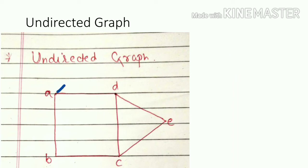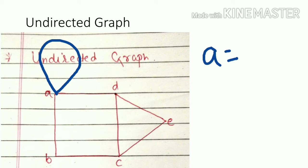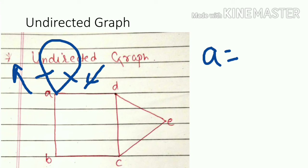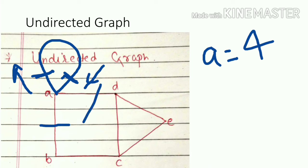Now suppose there is a loop on vertex A. Always remember, if there is a loop on an edge we consider it as 2 — one for outgoing and one for incoming. So the degree of vertex A when there is a loop will be equal to 4: this is 1, this is 2, this is 3, and 4.